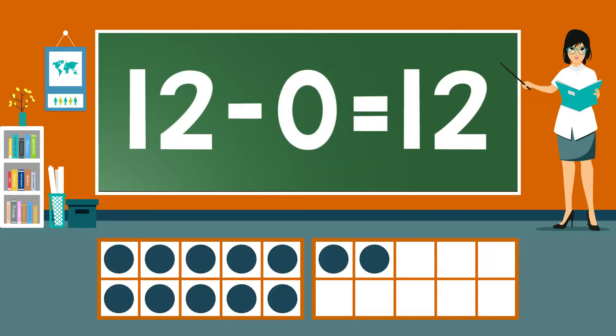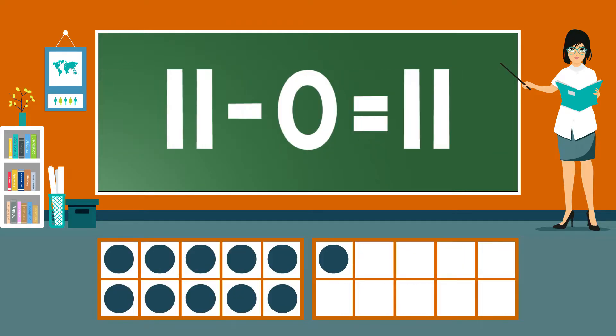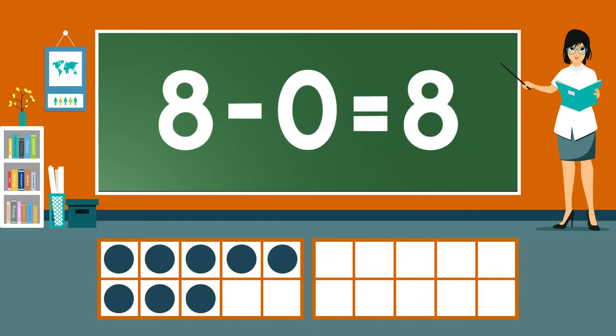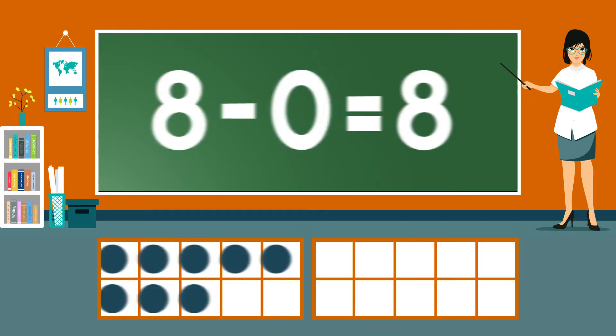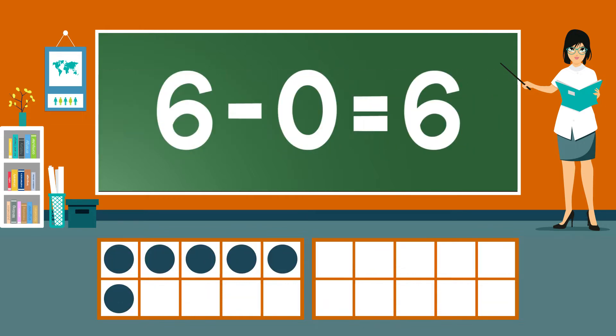12-0 equals 12. 11-0 equals 11. 10-0 equals 10. 9-0 equals 9. 8-0 equals 8. 7-0 equals 7. 6-0 equals 6. 5-0 equals 5. 4-0 equals 4.